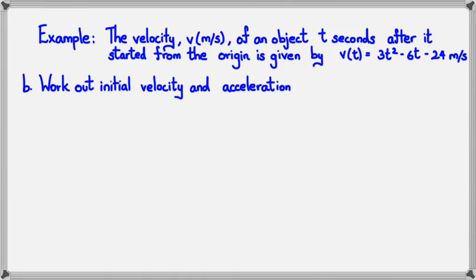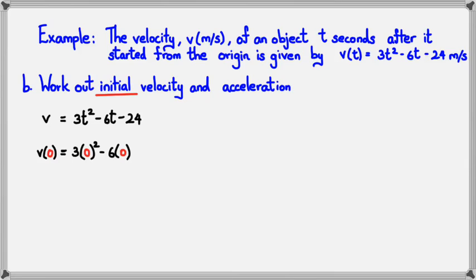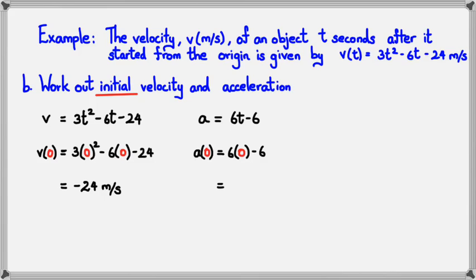Next, find the initial velocity and acceleration. Using v(t) = 3t² − 6t − 24, the initial velocity is v(0) = 3(0) − 6(0) − 24 = −24 m/s. For initial acceleration, using a = 6t − 6, a(0) = 6(0) − 6 = −6 m/s².